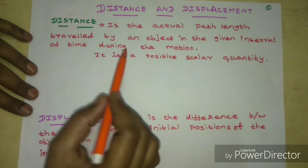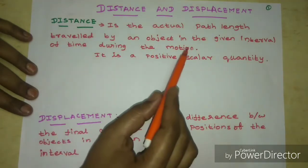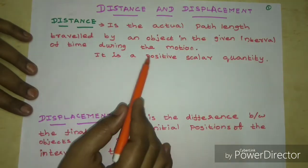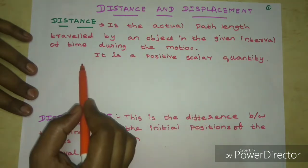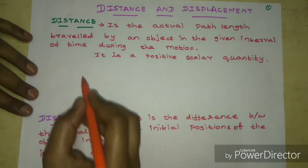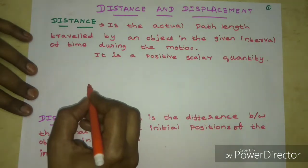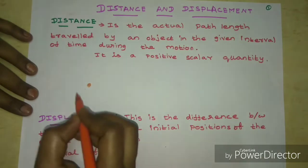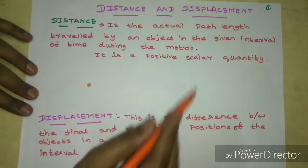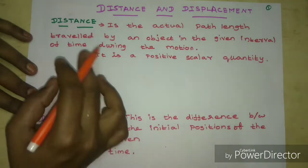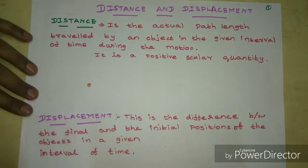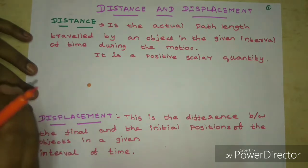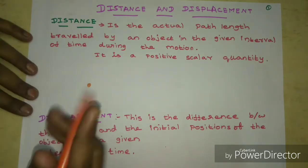Distance is the actual path length traveled by an object in a given interval of time during motion. Whatever path you take, any path you travel — that total path length is the distance.